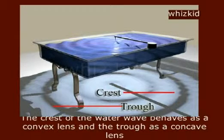Formation of Bright and Dark Bands: The crest of water wave behaves as a convex lens and the trough as a concave lens.